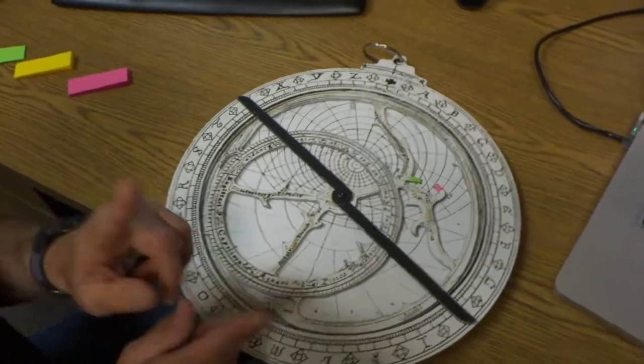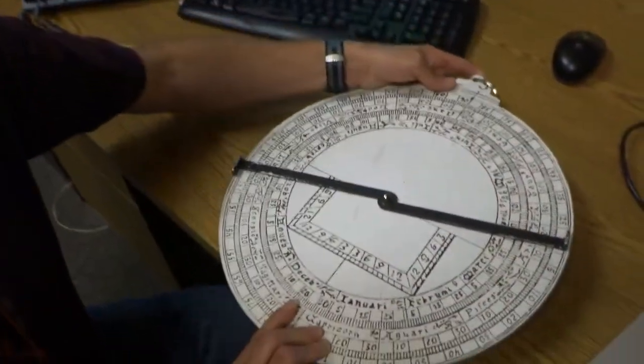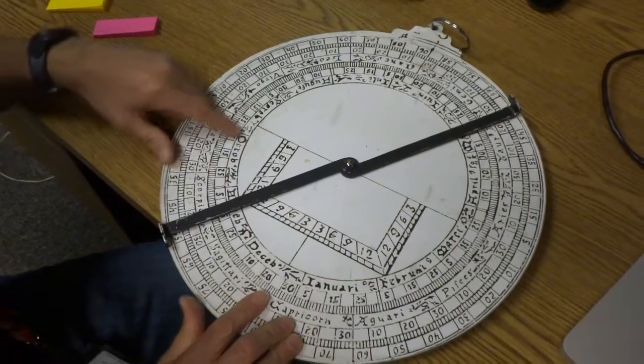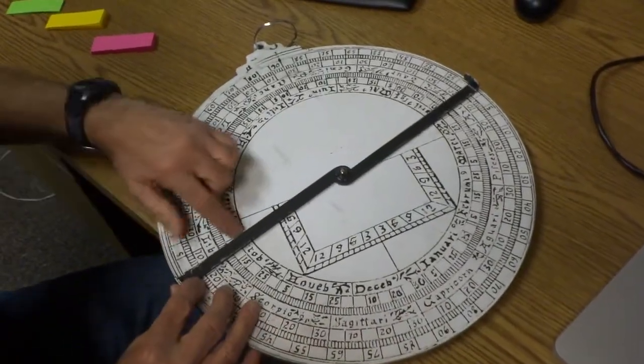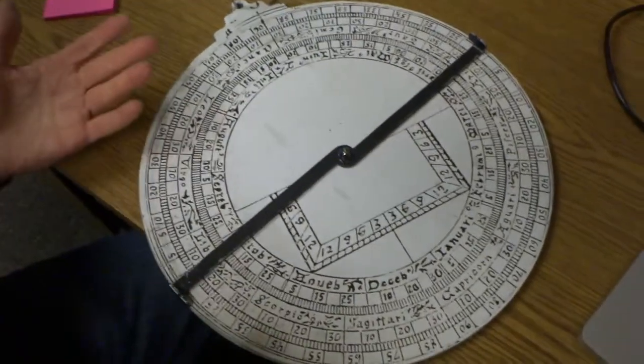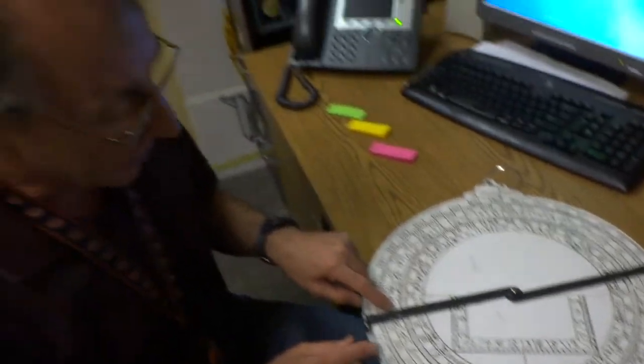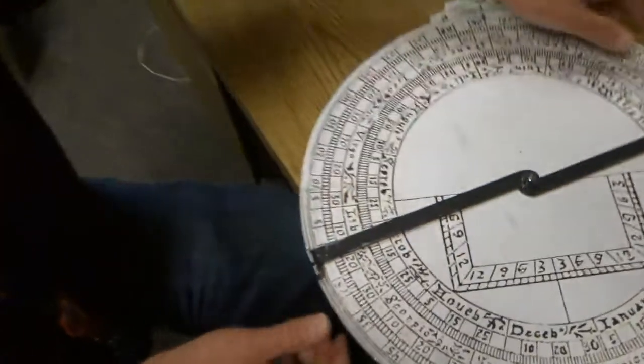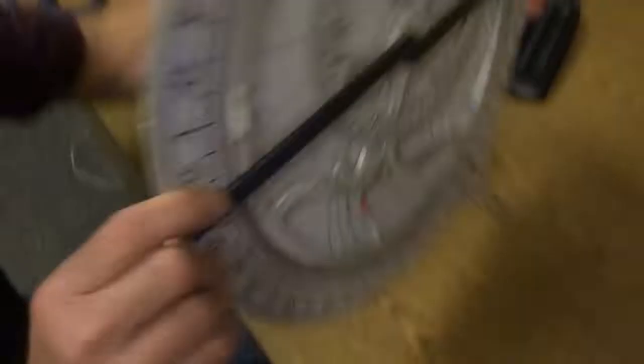And for a particular day, like October 2nd, let me turn this over and use my little chart. There is September. There is October. October 2nd, right about there. If I wanted to look at it from an astrological point of view, it's in Libra. So it's past Virgo. It's about a third of the way in Libra. And this is just like a little handy chart.